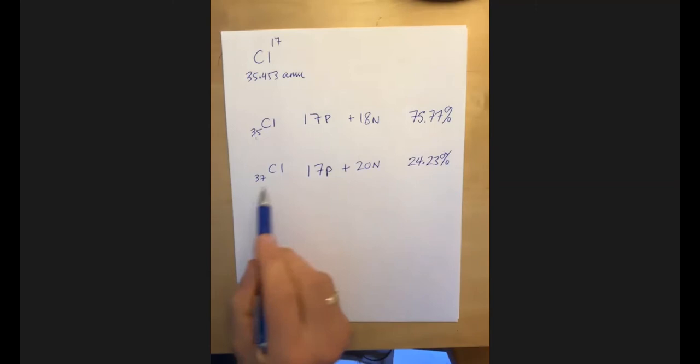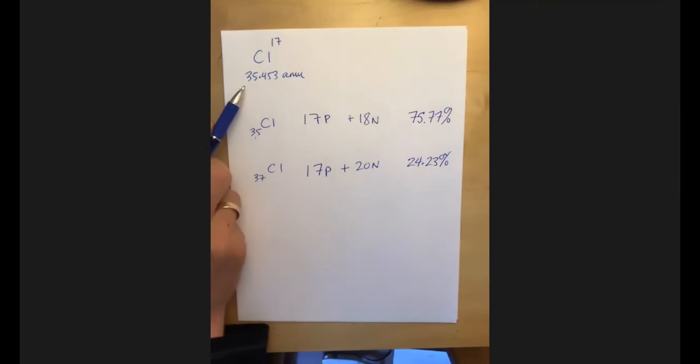They have a mass of about 36, but the actual mass is 35.45. Oh yeah. That makes sense because most chlorine, apparently 75% of it weighs 35. So the mass is actually three quarters of the way down from the difference between 37 and 35.